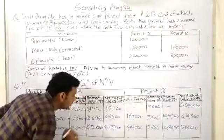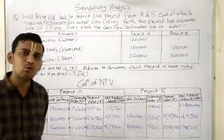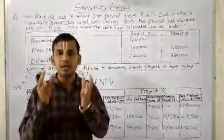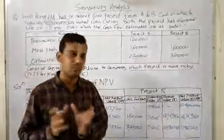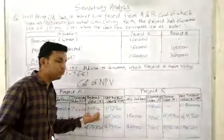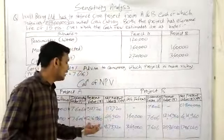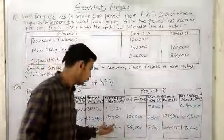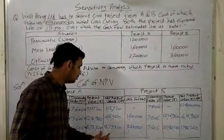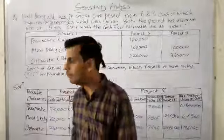These are our present values, but we need to calculate net present value. Whenever we calculate NPV, we deduct our investment from the present value. For this question, our investment was 8,00,000. So 9,12,720 minus 8,00,000 equals 1,12,720. Similarly, 12,16,960 minus 8,00,000 equals 4,16,960. For optimistic, 16,73,320 minus 8,00,000 equals 8,73,320 for Project A.